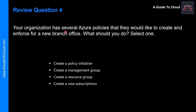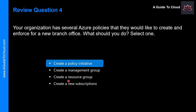Let's look at the next question. Your organization has several Azure policies that you would like to create and enforce for a new branch office. What should you do? Select one answer. This is a pretty straightforward question — you have several Azure policies, and the correct answer is Azure policy initiative. Not by creating a management group, resource group, or a subscription. You create a policy initiative to enforce these policies to your branch office, which includes all the policies of interest. Once created, you assign the definition to establish a scope, which determines what resources or groupings the policy assignment gets enforced on.